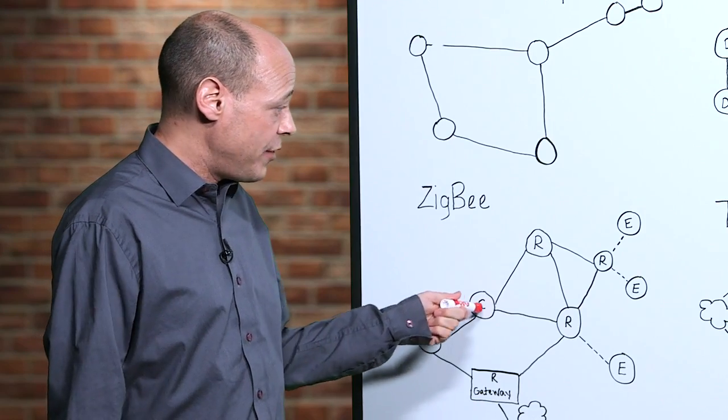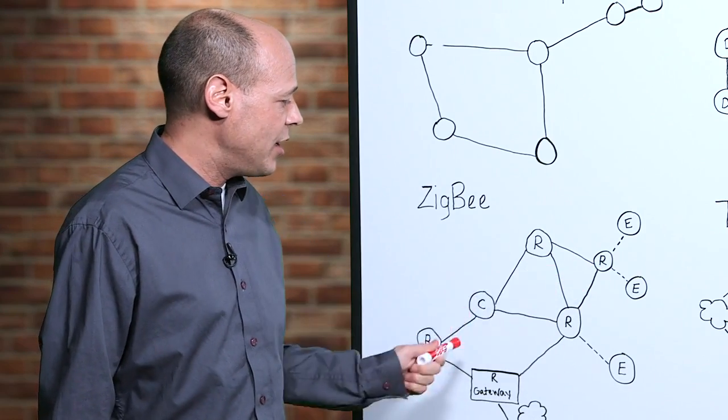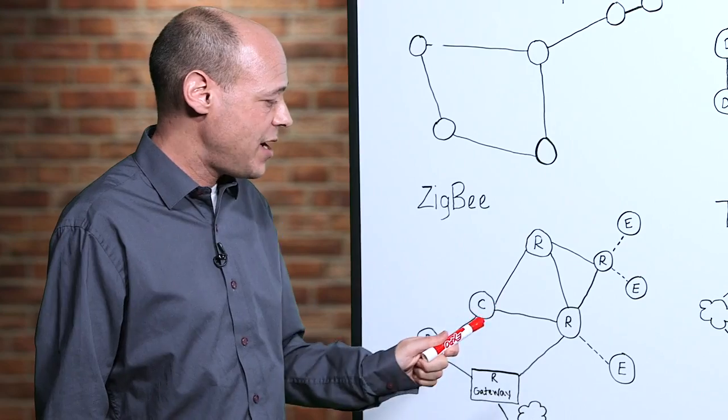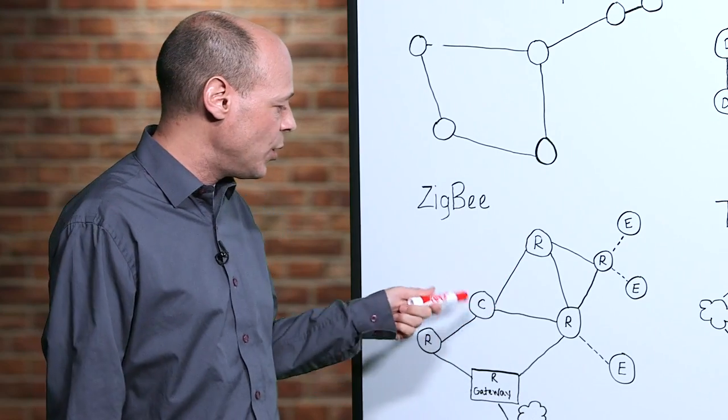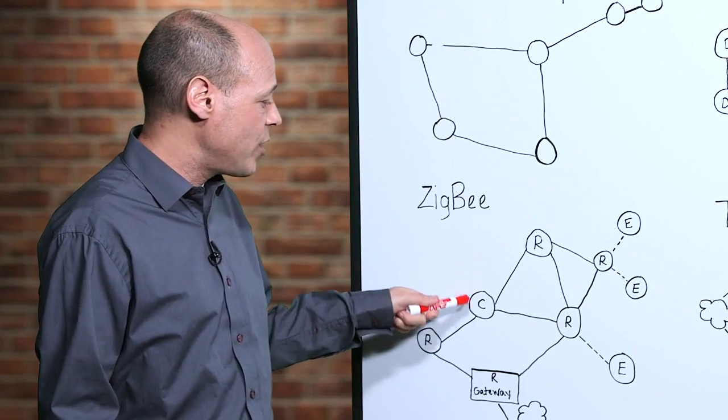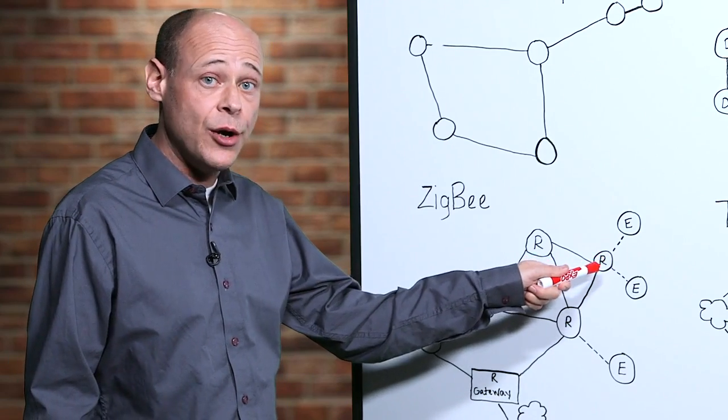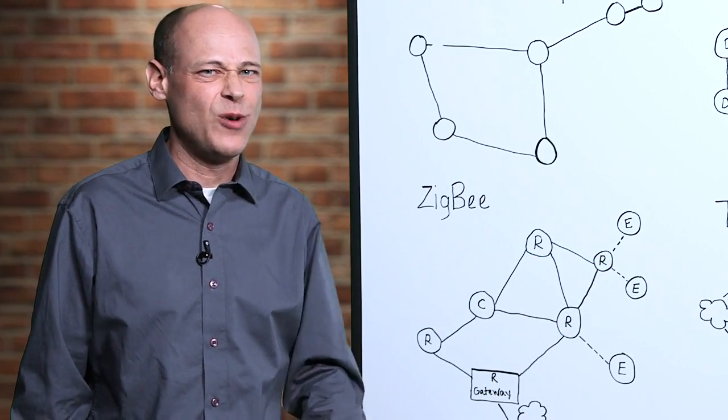So for example, this radio can talk to this radio through this one up here. But if that one becomes disabled, the network will automatically rebuild a route through another radio so that information can still reach its destination.